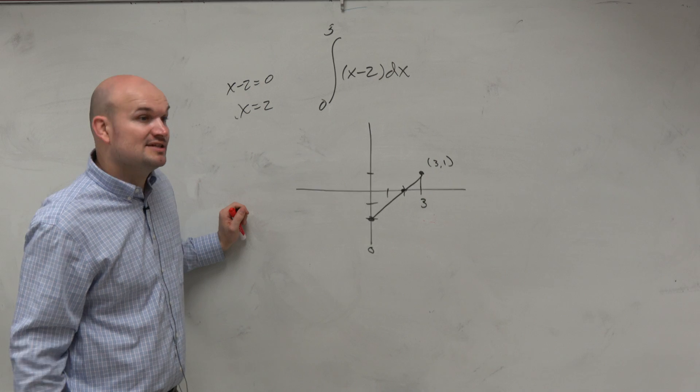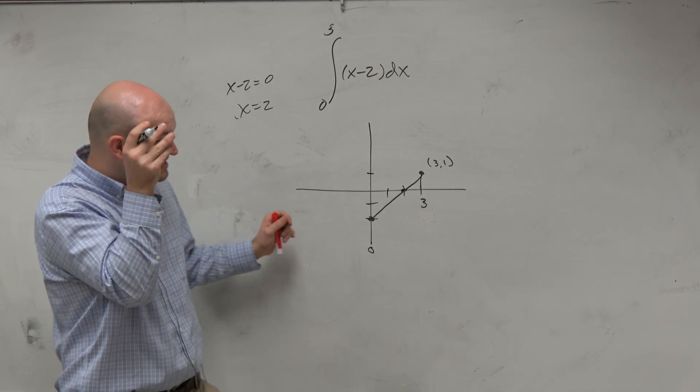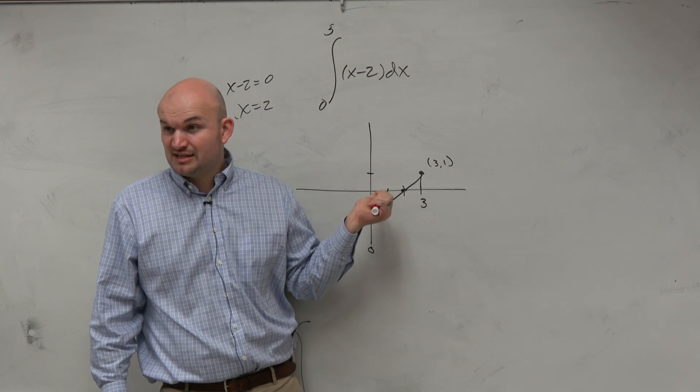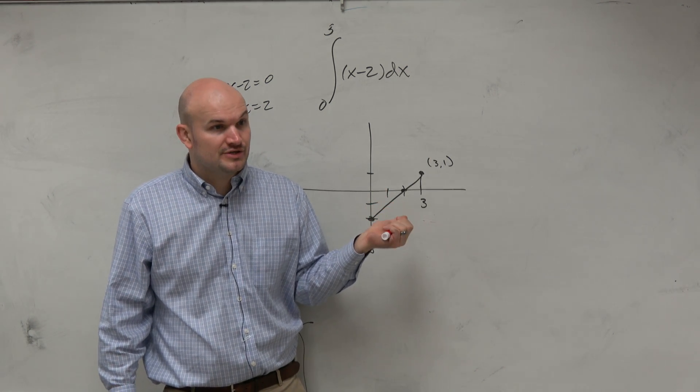Now, if we're going to integrate this, do we already kind of know what our integral is going to be? Besides even looking at the integral, just by visualizing this area or this net area, we know that our net area kind of looks like it's going to be negative, right? Do you guys agree?